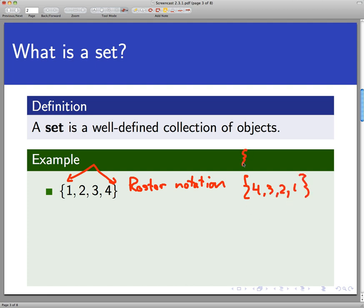Here would also be the same set if I wrote one, one, two, two, three, four. We don't count duplications at all. We factor those duplications out. So there's a set written in roster notation.